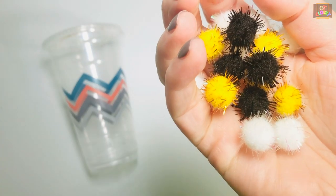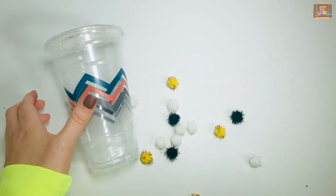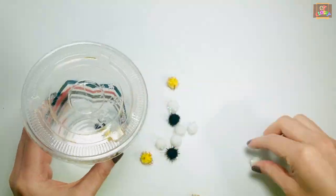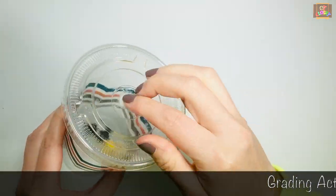For activity number five, you will need pom-poms and a cup with a lid. Try to pick up as many pom-poms off the table and place them in the cup one at a time.